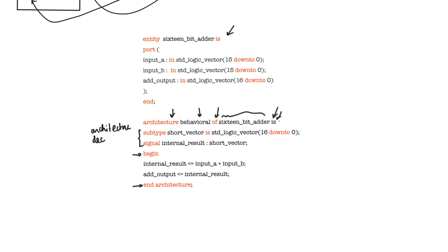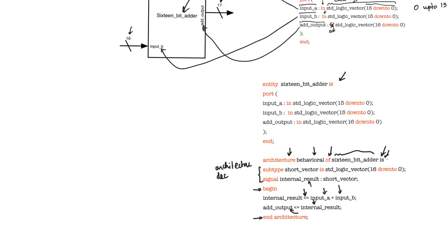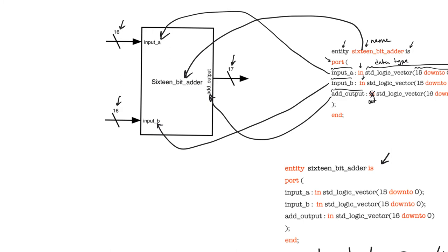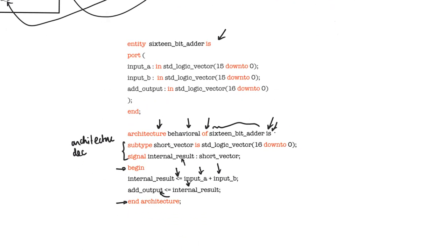Here we have an internal signal called 'internal_result' of a special data type called 'short_vector'. It is equal to the summation of the two inputs: input_a plus input_b. Then the output is assigned the value of this internal signal. It's just a 16-bit adder — it accepts two 16-bit vectors and produces one 17-bit vector output. When this passes through synthesis as the top-level design, it will produce one 16-bit adder.